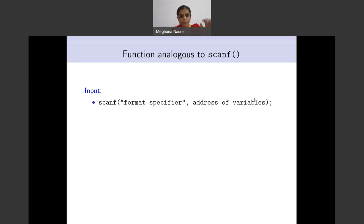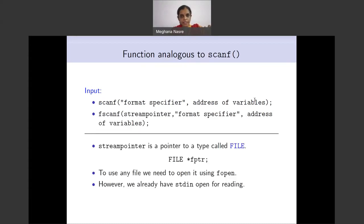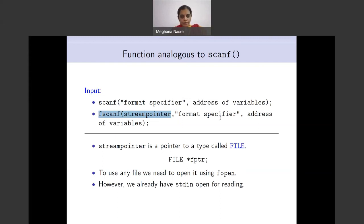scanf is something that we know well. The analogous function to scanf is called fscanf — the 'f' comes from the file part of it. The fscanf function has the following prototype: it has a stream pointer, the same format specifier (%d, %f, %c, %s, and so on), and then the address of the variable. The remaining part is very similar to scanf; however, we also need a stream pointer.